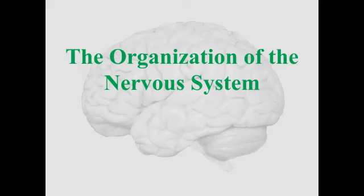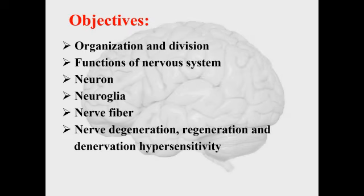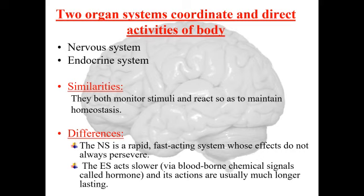Good morning students. Today's topic is the Nervous System. We are going to see the organization and division of the nervous system, functions of the nervous system, neuron, neuroglia, nerve fiber, nerve degeneration, regeneration, and denervation hypersensitivity. The nervous system and endocrine system coordinate and direct activities of the body.